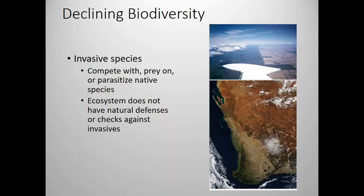The second reason we're losing biodiversity is invasive species. There's a difference between invasive species and non-native species. A non-native species might be something like the ring-necked pheasant here in Wisconsin — it's actually from Asia. People like to hunt them, and they were brought over because they grow well in our grasslands. But they don't cause huge problems and don't really compete with a lot of our native birds.